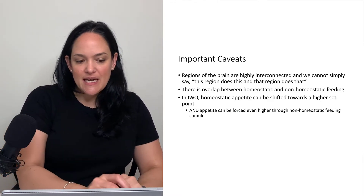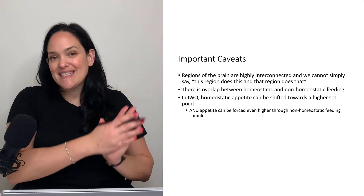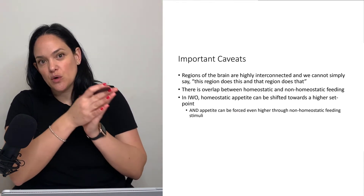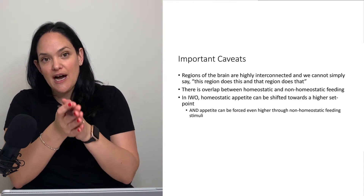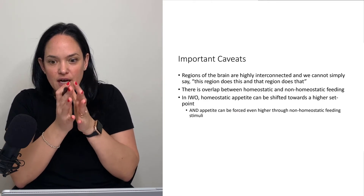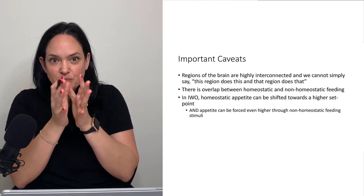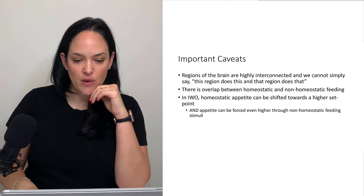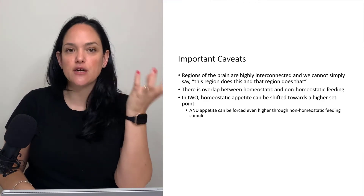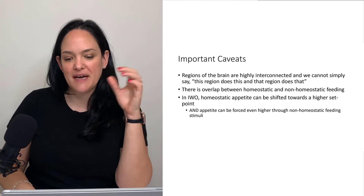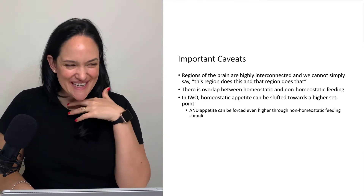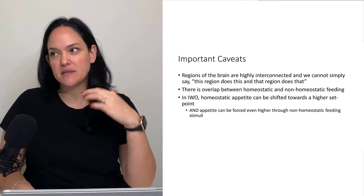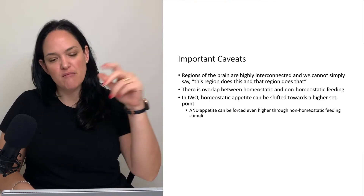In individuals with obesity, homeostatic appetite is shifted towards potentially a higher set point or a higher feeding pattern, plus hedonic appetite can override that as well. I'll use hedonic and non-homeostatic interchangeably, though non-homeostatic is the better umbrella term.